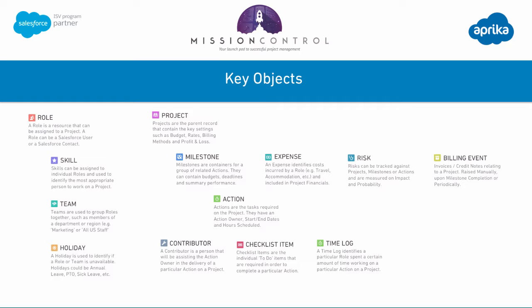To support the billing events you're also able to add tax rates. The tax rates are the individual records that identify the tax percentage that will be applicable for any invoices that are raised against the project. Underneath the billing event you're also able to receive the payment once the client has paid the invoice that you've generated.